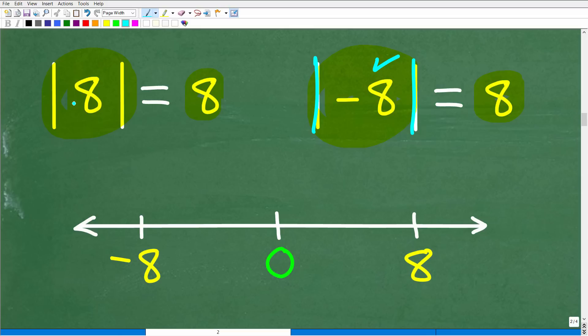Okay, so the absolute value of a positive eight, we're saying, hey, eight, how far are you from zero on a number line? The absolute value of negative eight, we're saying, hey, negative eight, how far, what's your distance away from zero on a number line? So we can kind of see this visually here. Here is eight and here is negative eight and here is zero. Okay. Now some of you might be a little bit confused, but let's not be confused. So absolute value is the distance a number is from zero on a number line.